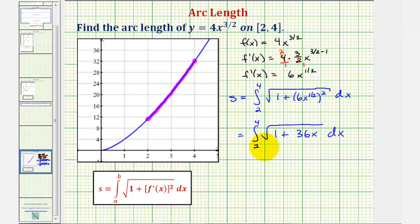Now we can integrate this using u substitution. If we let u be equal to this radicand, we would have u equals 1 plus 36x, and therefore differential u would be 36 dx. So if we divide both sides by 36, notice how dx is equal to 1 over 36 du, so we'll have an extra factor of 1 over 36 when writing the integral in terms of u.